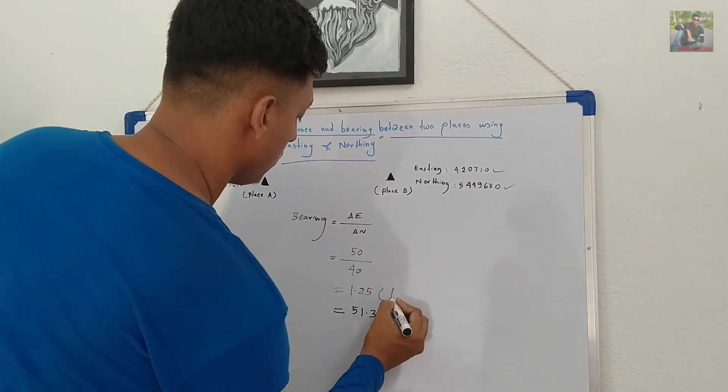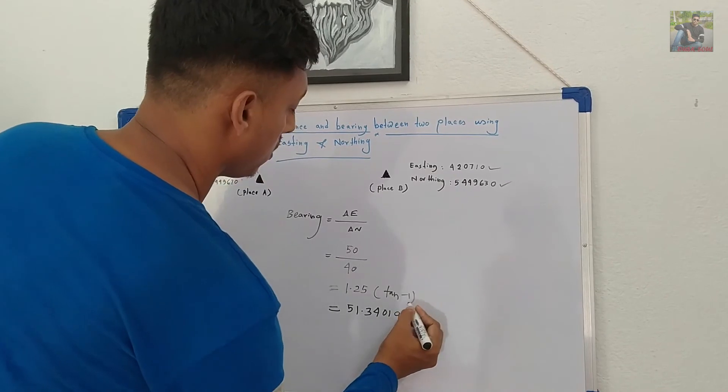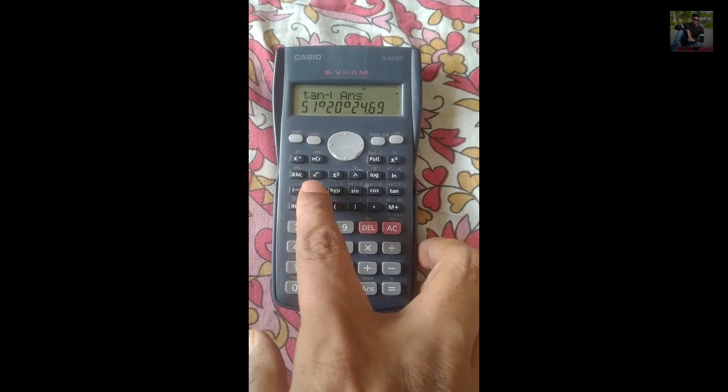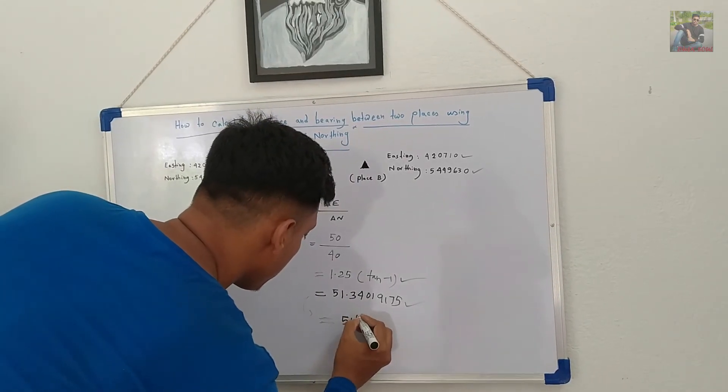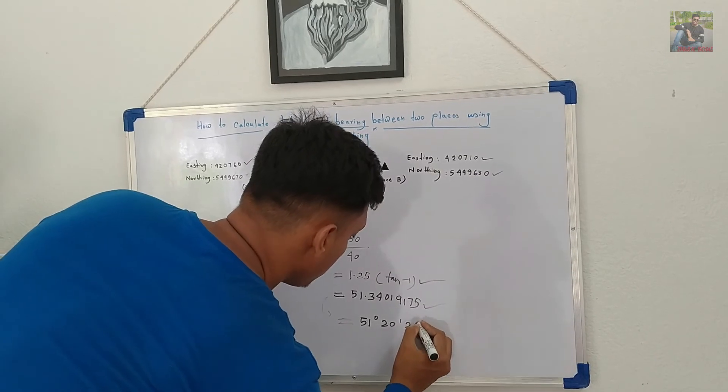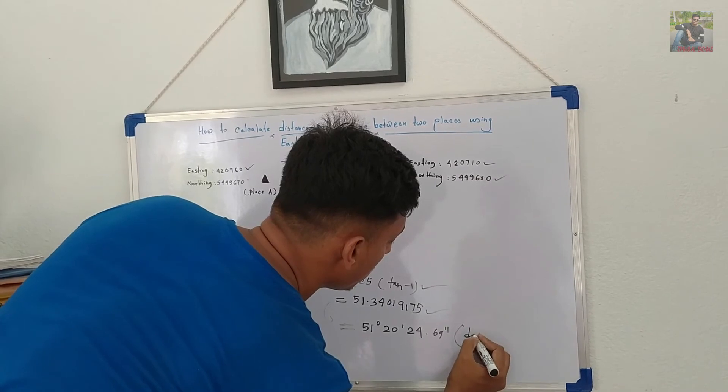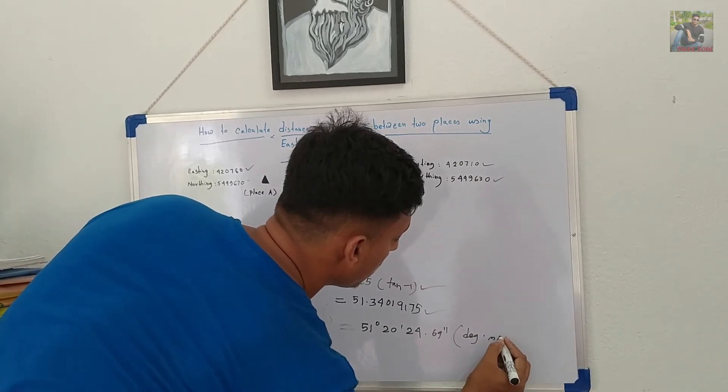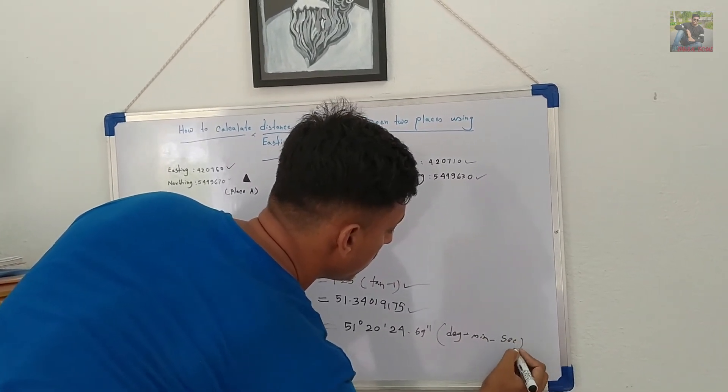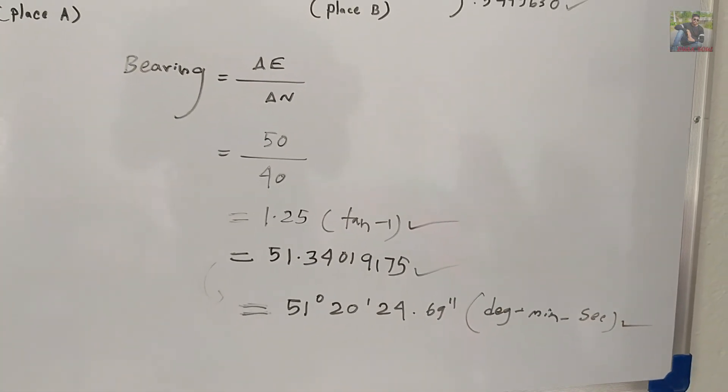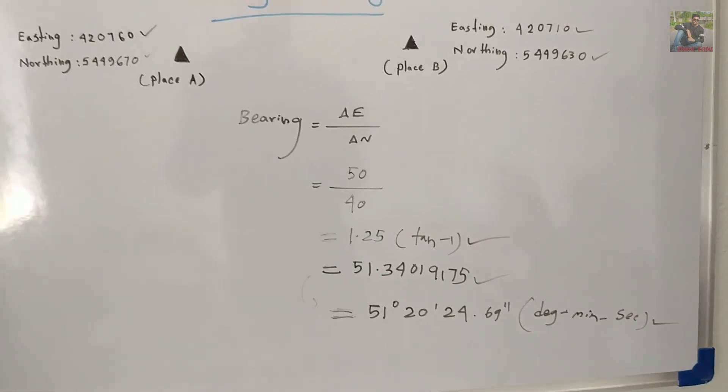You can convert this value into degree minute second by typing the degree symbol from the calculator. So, this is the value: 51 degree 20 minute 24.169 seconds. So, this is the key part.